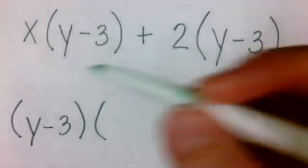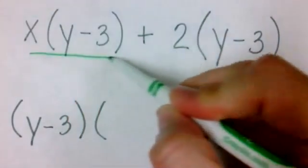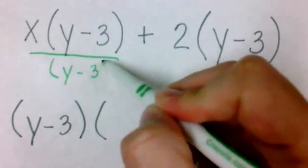We'll fill the second parenthesis by what we get when we divide by that (y-3) parenthesis that they had in common.